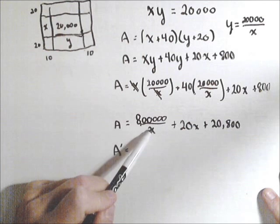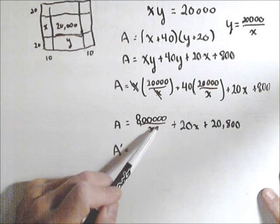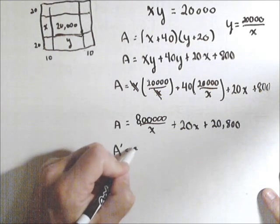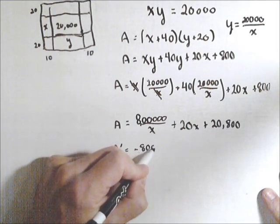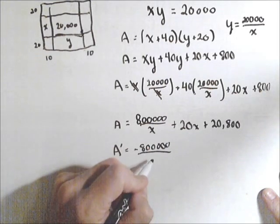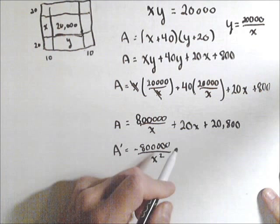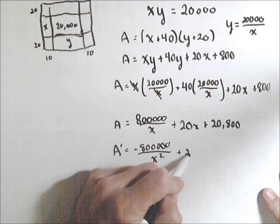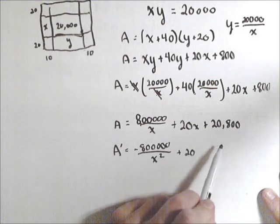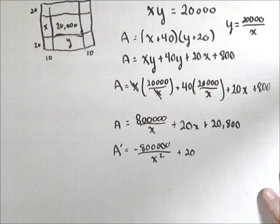Now here, this is the same as 800,000 times x to the negative 1. So pull the negative 1 out front, so negative 800,000, and increase the power by 1, so that becomes over x squared, plus 20. This is just a constant, so it goes away.